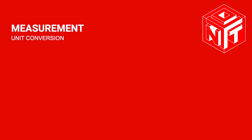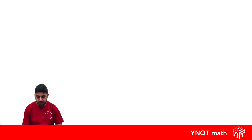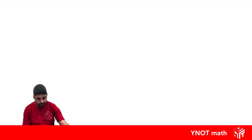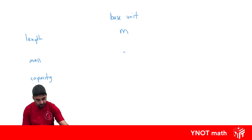Unit Conversion. In maths, we often need to convert one unit to another, and here we're going to look at how we can do that. We're going to start off by looking at a base unit, and we're going to do that for length, mass and capacity. Our base unit for length is going to be metres, for mass it's going to be grams, and for capacity it's going to be litres.